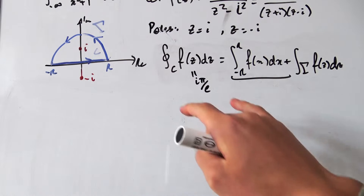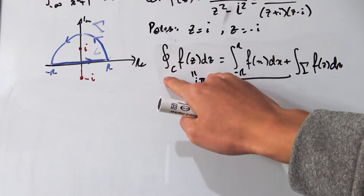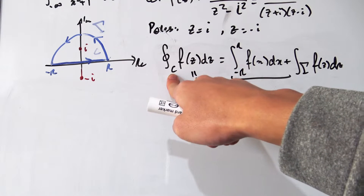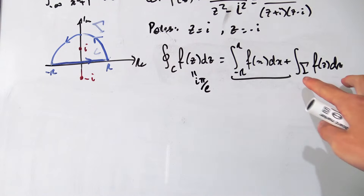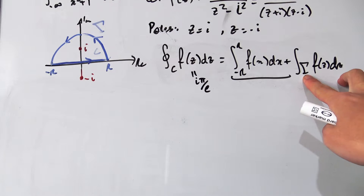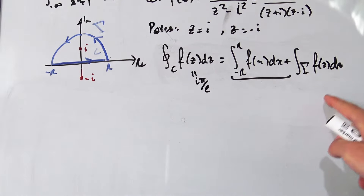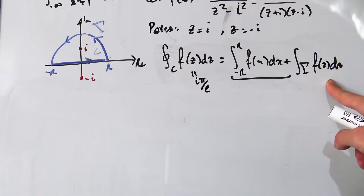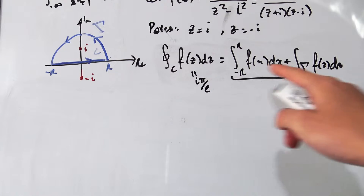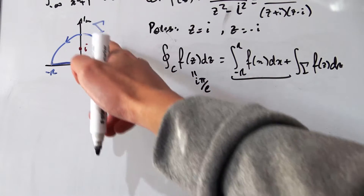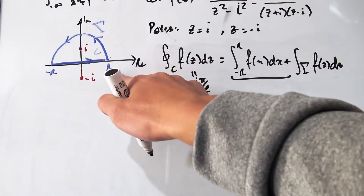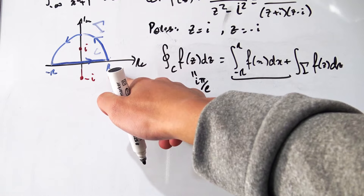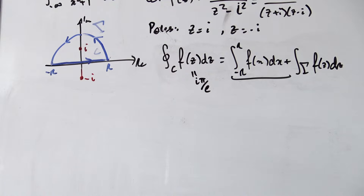We've figured out the contour integral over C. Now we need to figure out what the integral over gamma is. You could use Jordan's lemma to show it goes to zero as R → ∞, but in this video I'm going to evaluate it from scratch.